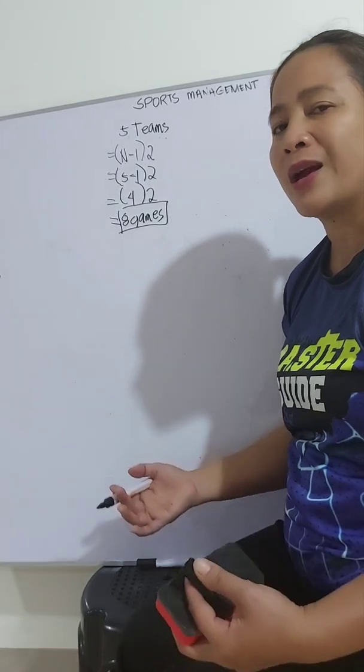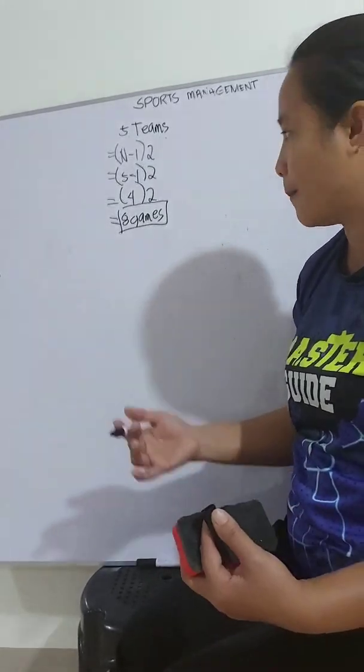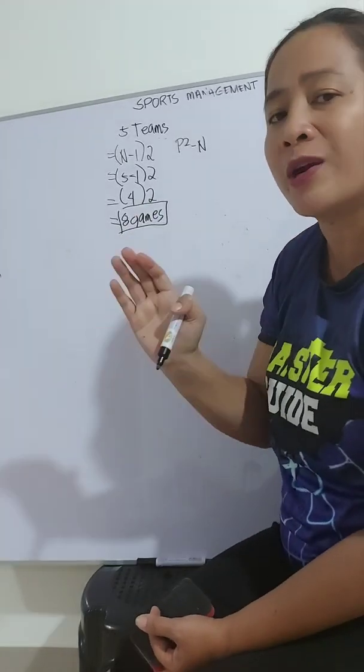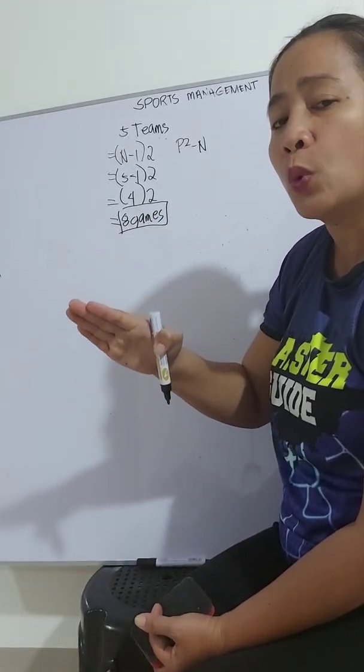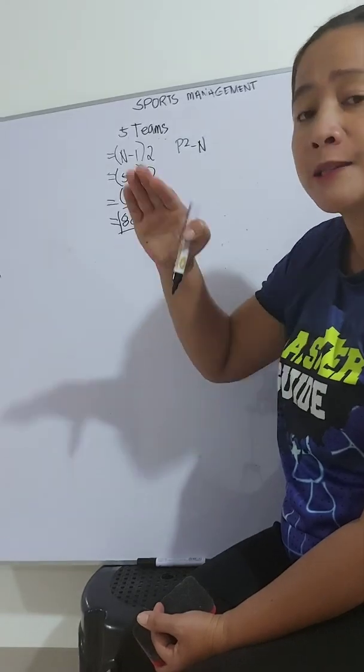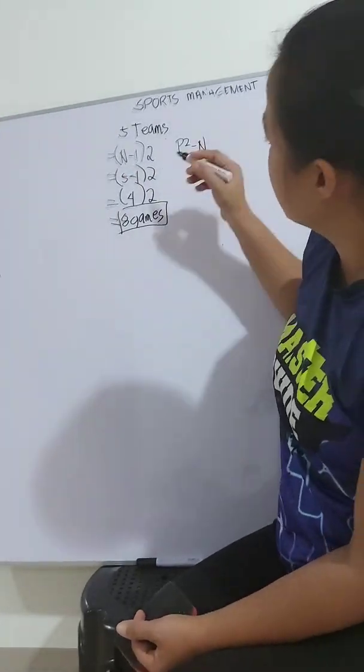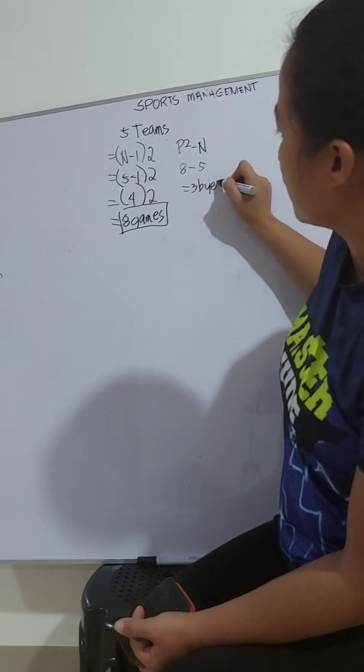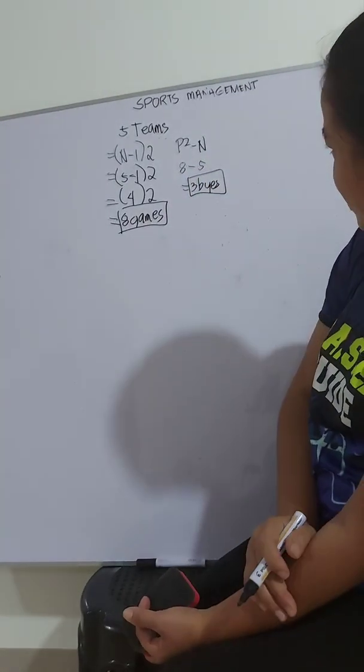So it is double compared to single elimination. Because in single, once you lose, you'll be eliminated right away. That's why it is called the knockout system. So the same in power of 2 minus N. It's 8 minus 5. We have 3 byes. And so let's proceed now to the diagram.